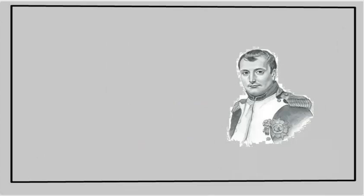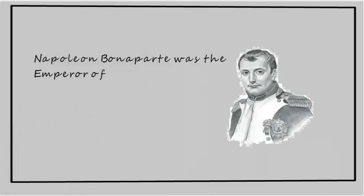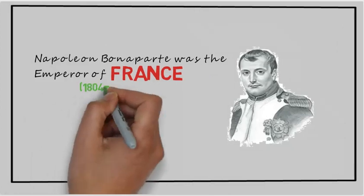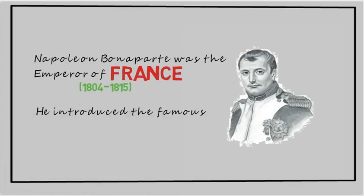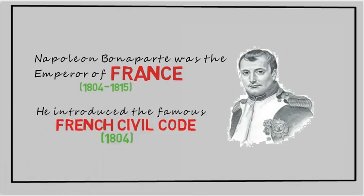Napoleon, or Napoleon Bonaparte, was the Emperor of France who ruled between 1804 and 1815. He introduced the famous French Civil Code, or Napoleonic Code, in 1804 as an effort to have a formal legal system or law in the country.